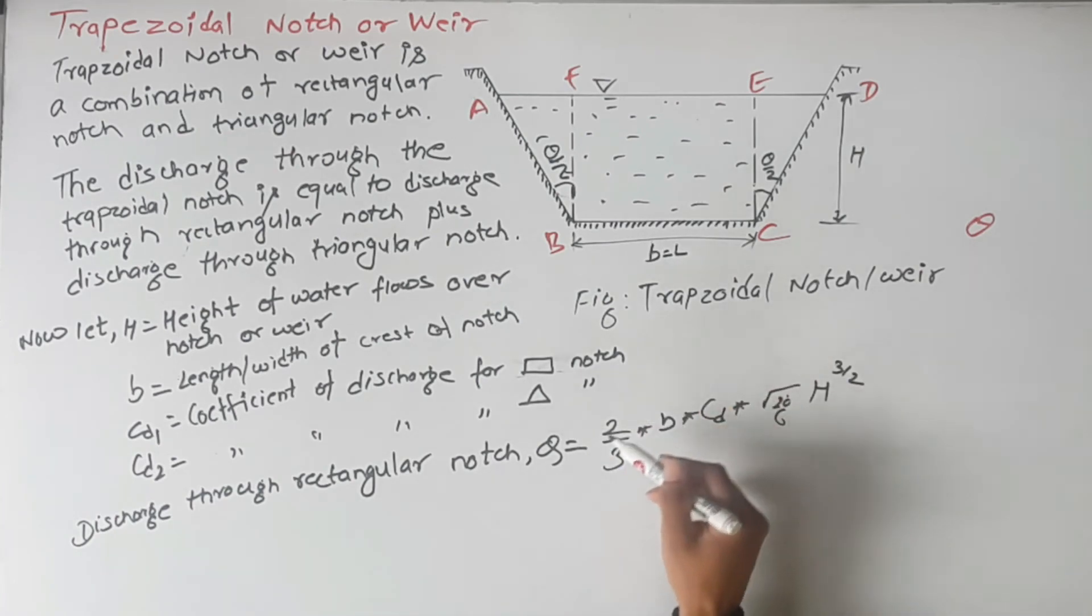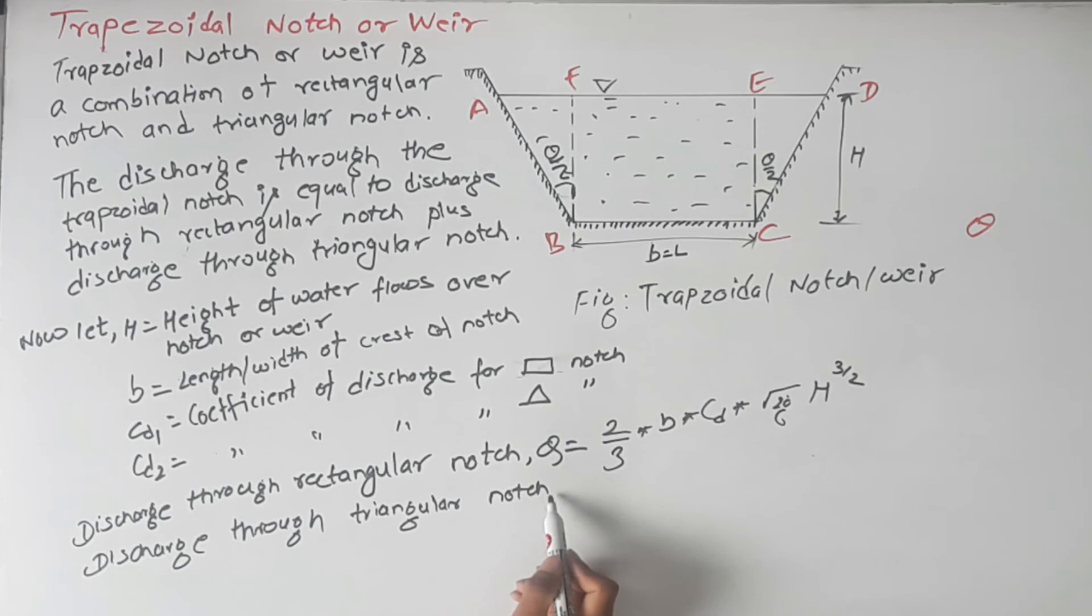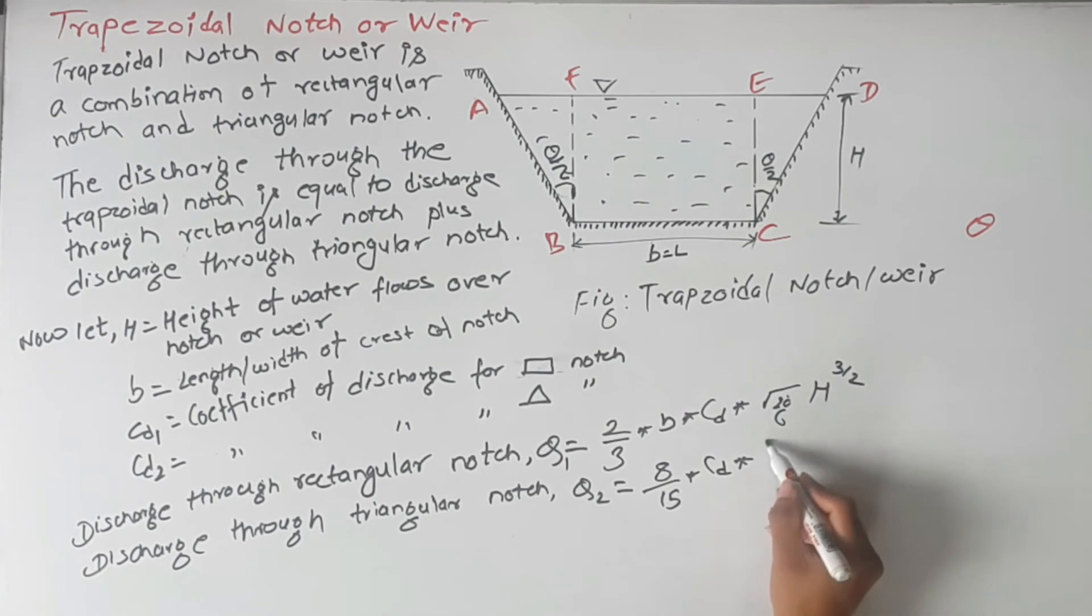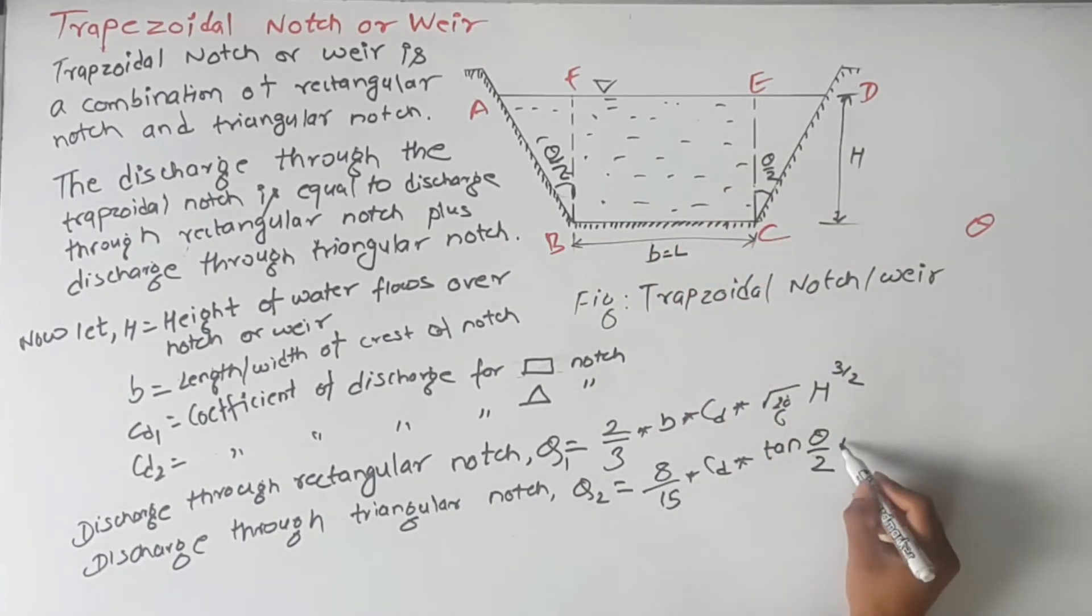And also we know for triangular notch, Q2 is equal to 8/15 into CD2 into tan theta/2 into root under 2g into h to the power 5/2.